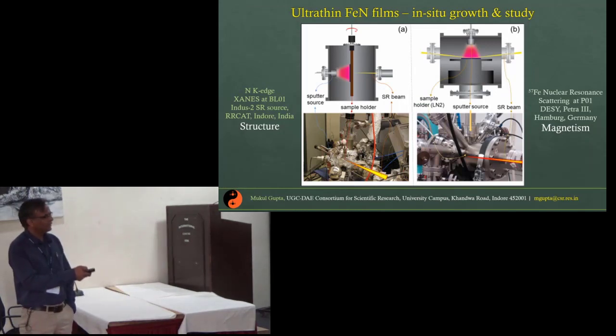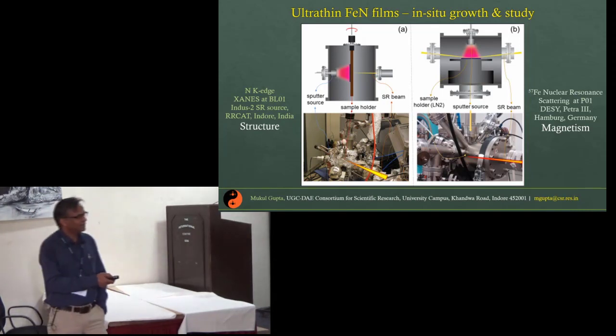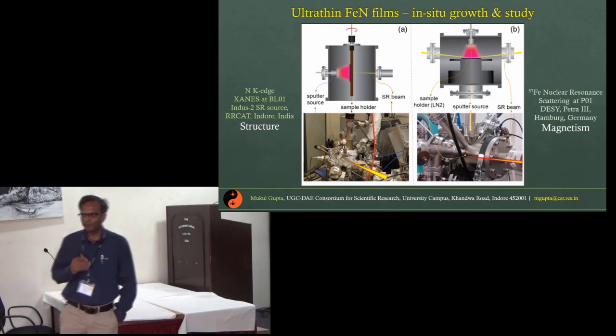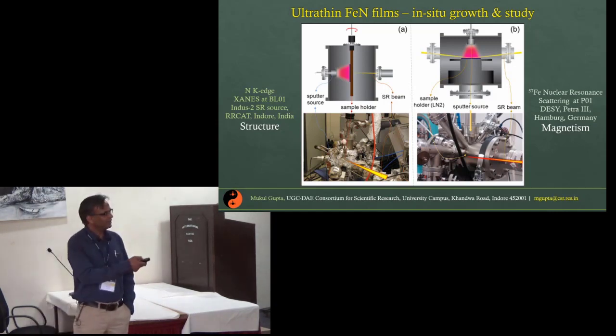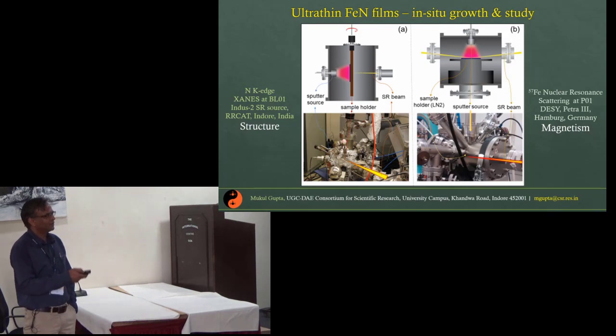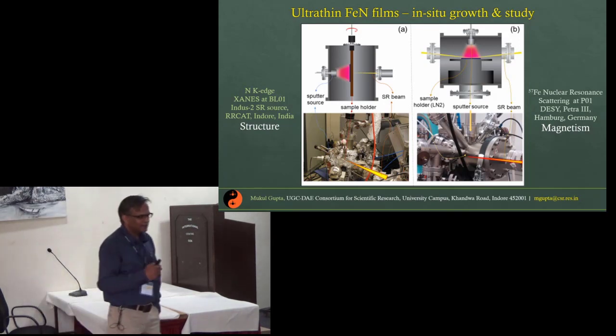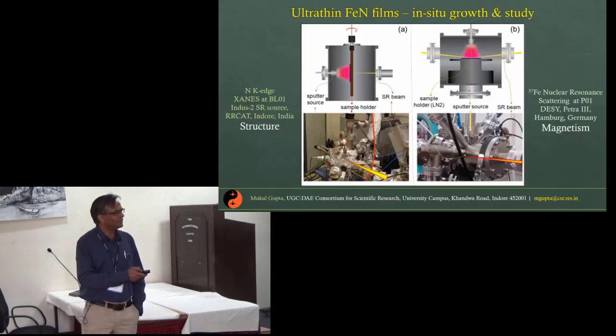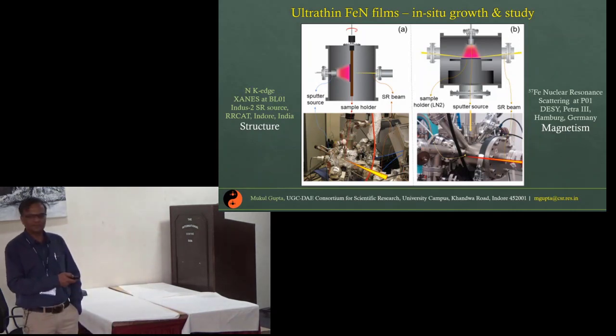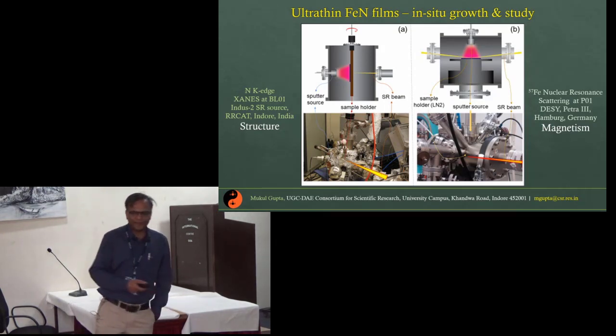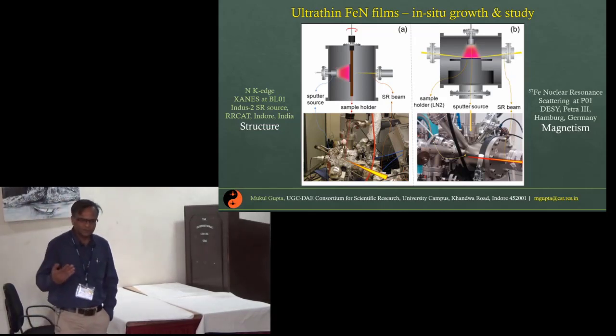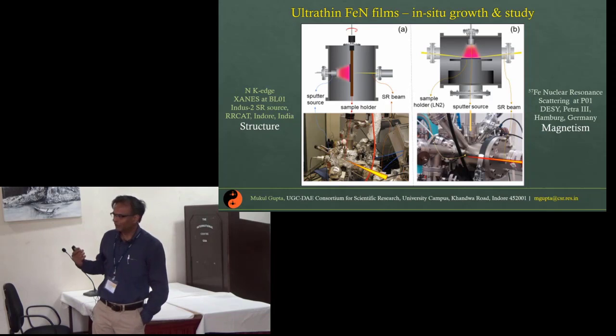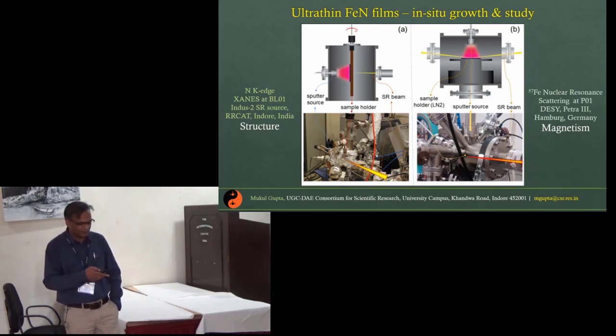We designed a couple of experiments: one at our beamline at the Indus-2 synchrotron radiation source at Indore, and other at DESY in Petra-3 P01 beamline. We used identical configurations. In both cases there was a 1-inch magnetron source, using natural iron source here and 57-iron source there for nuclear resonance. Using exactly similar conditions at both beamlines we investigated how the nitrogen K-edge changes as a function of thickness, as well as how the nuclear forward scattering changes. The growth of the films must be done at low temperature, so we put a liquid nitrogen feed through and samples are cooled to about 100 K, and at this temperature the growth was carried out.